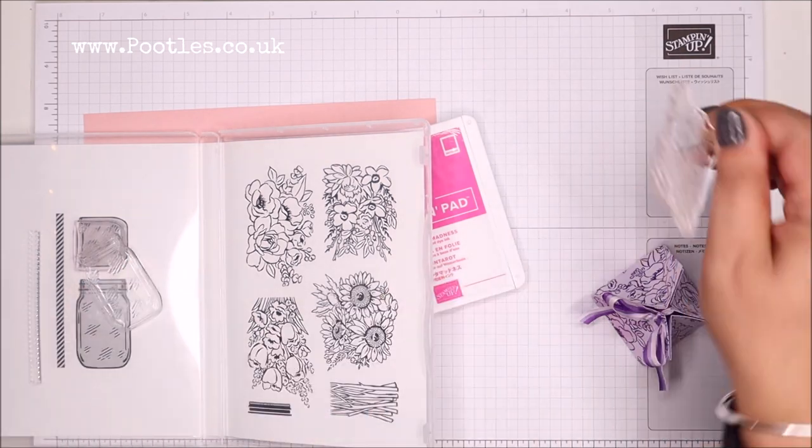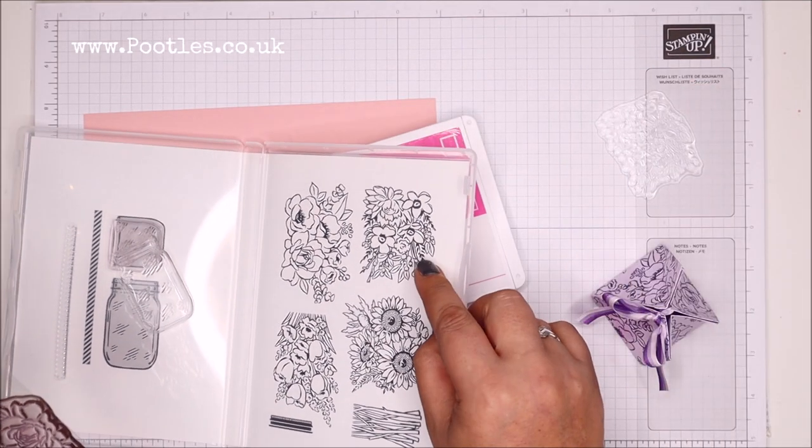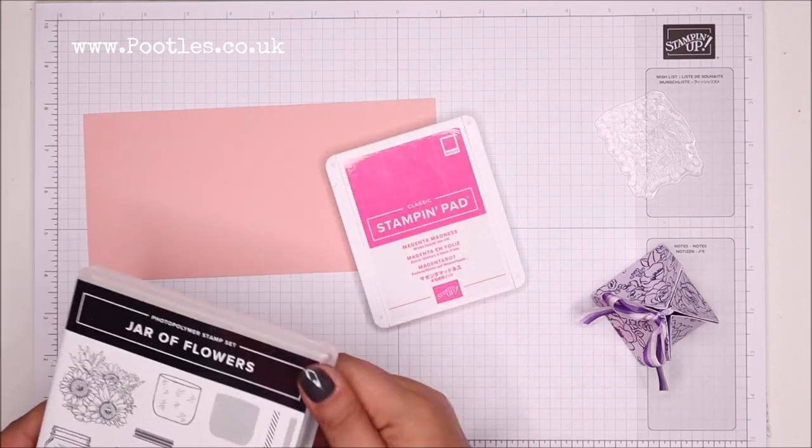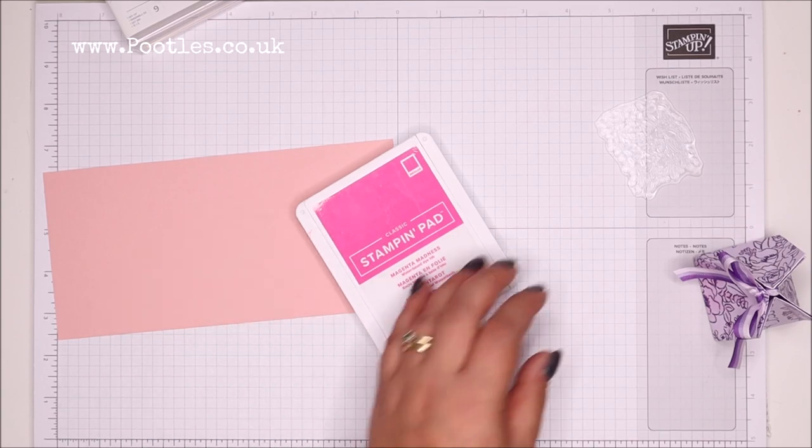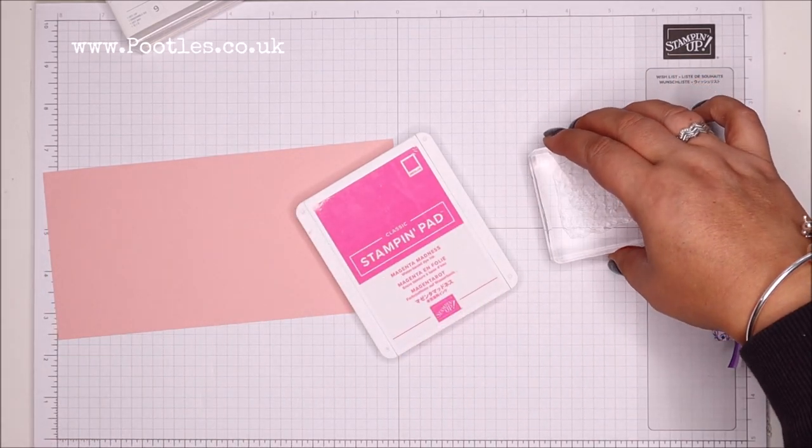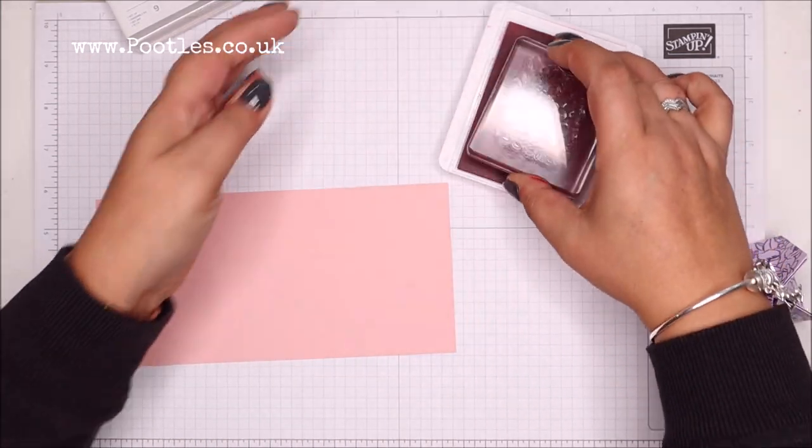Right. So you have to stamp first. Stamp before you cut and score everything. And it is completely random where you stamp and where you get your images. Okay. Apparently, I haven't used Magenta Madness for a while either.